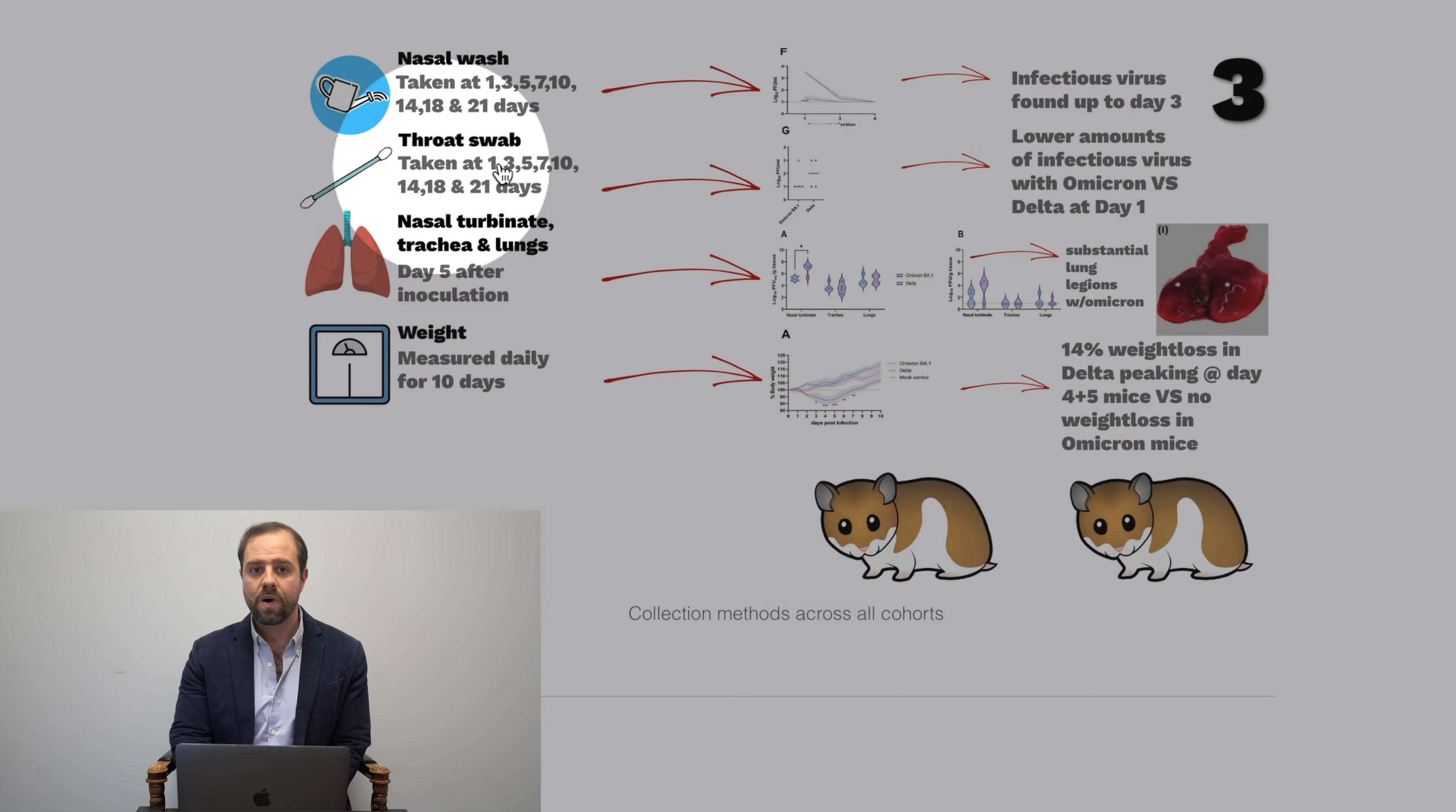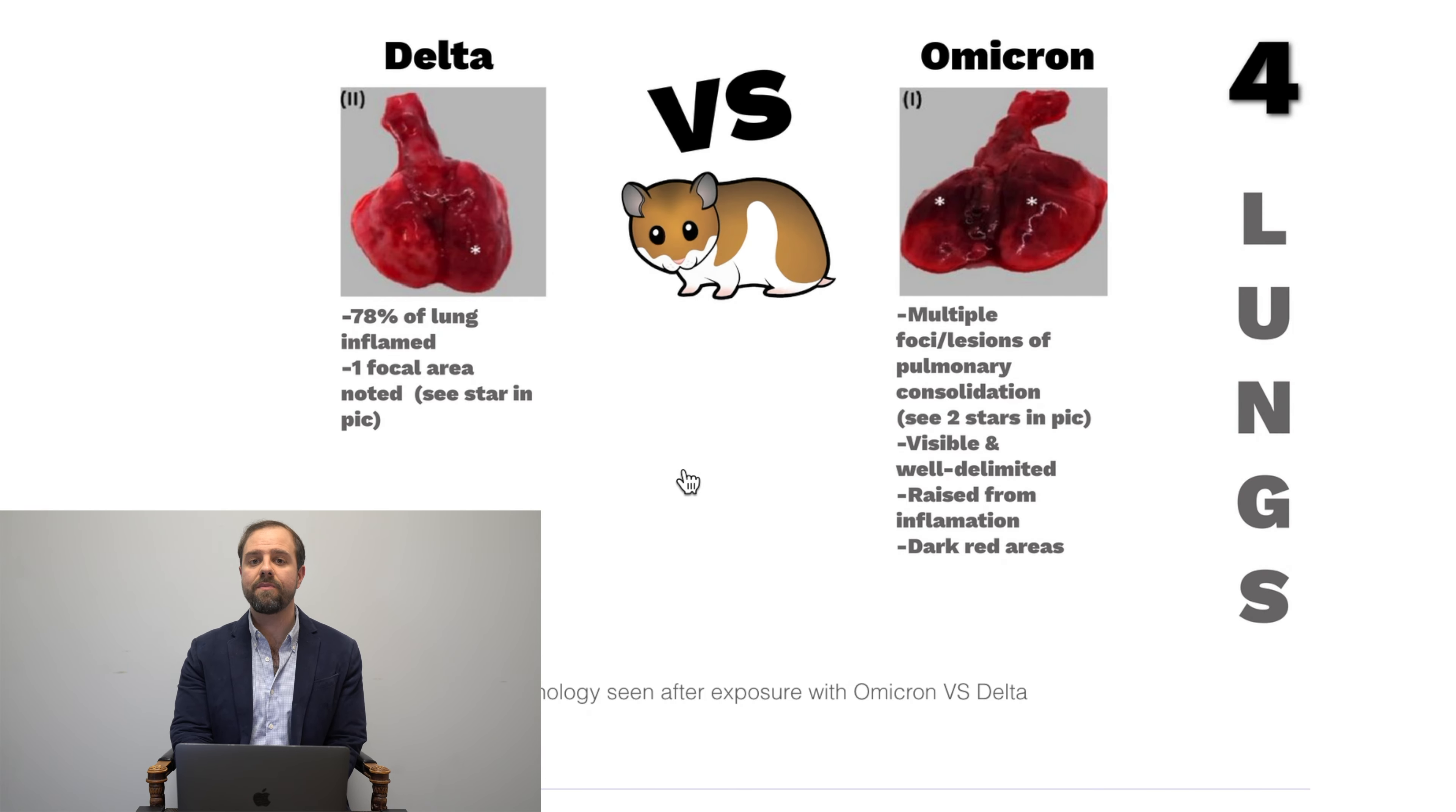But let's move to the final column where it says weight. If you look here at this first graph, weights were measured every day for 10 days. Omicron and Mach groups experienced no weight loss, while Delta exposed hamsters experienced 14% weight loss, peaking at four to five days. Now, finally, let me scroll down to this last slide.